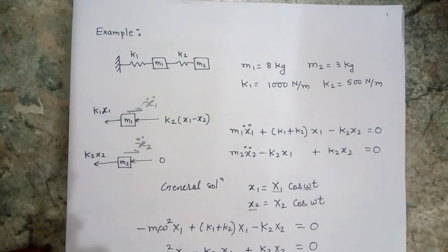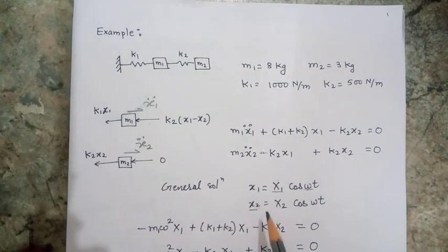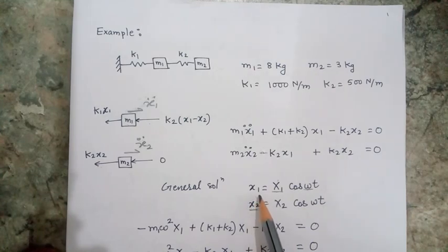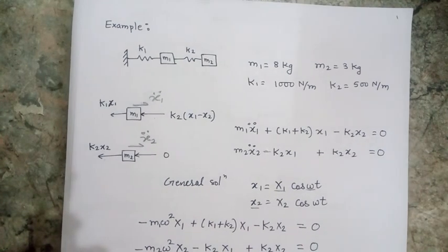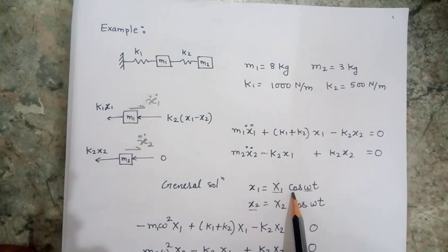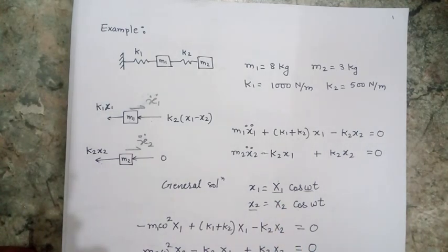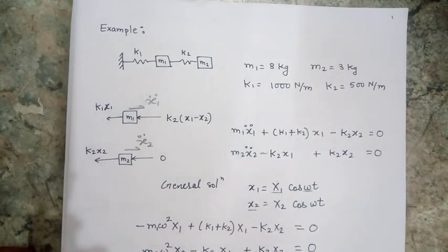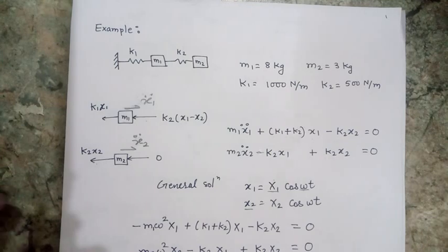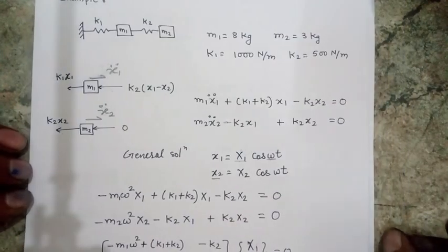To move further, I have to use a generalized solution for the two displacements. I have considered a harmonic solution for both masses: for the first mass it is x1*cos(ωt), and for the second mass x2*cos(ωt). x1 and x2 are two constants indicating the magnitude of vibration, and omega represents the frequency of oscillation. Please understand that I have considered the frequency the same for both masses.